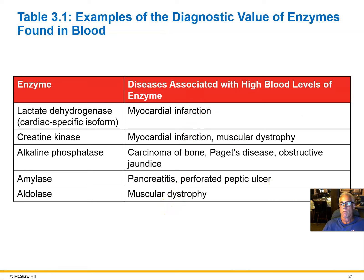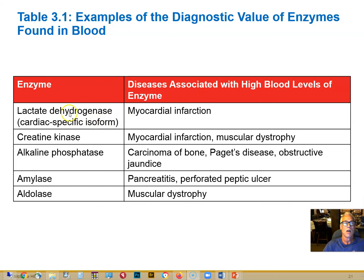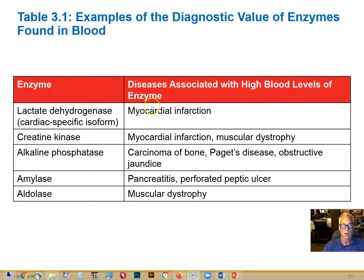For example, heart cells produce a heart-cell-specific lactate dehydrogenase, and that specific form can be identified. If you see a lot of that in the blood, you can infer there's been a heart attack — a myocardial infarction. Sometimes someone comes in with chest pain and we're not sure what's going on; this is one way to confirm there is, in fact, some heart injury.